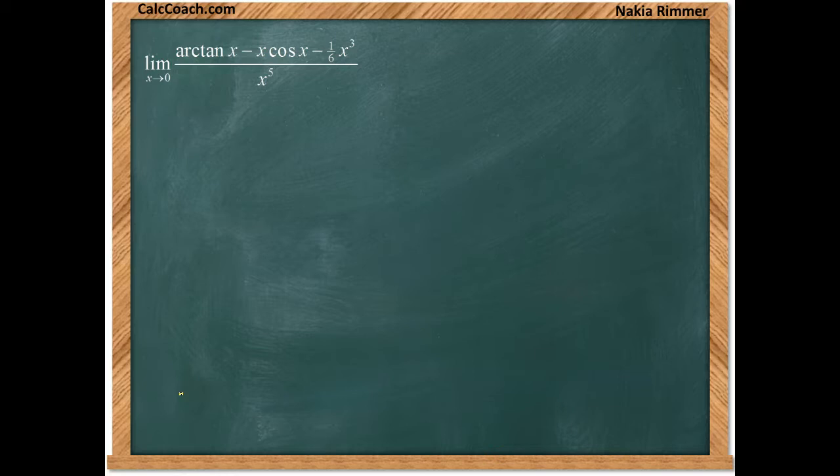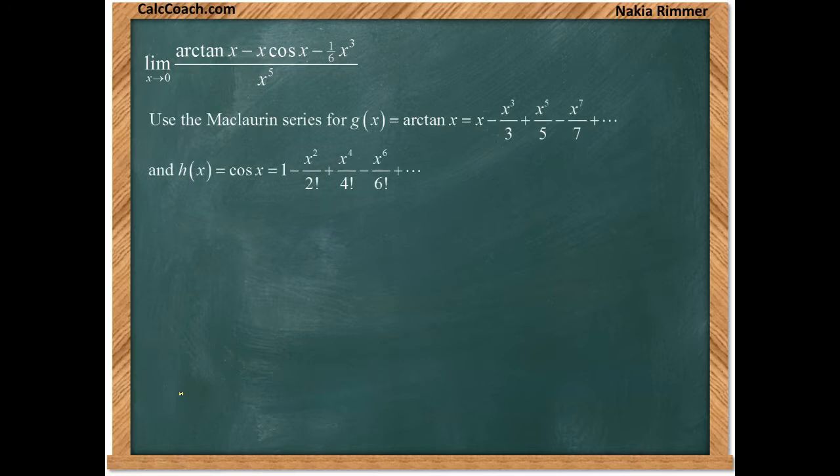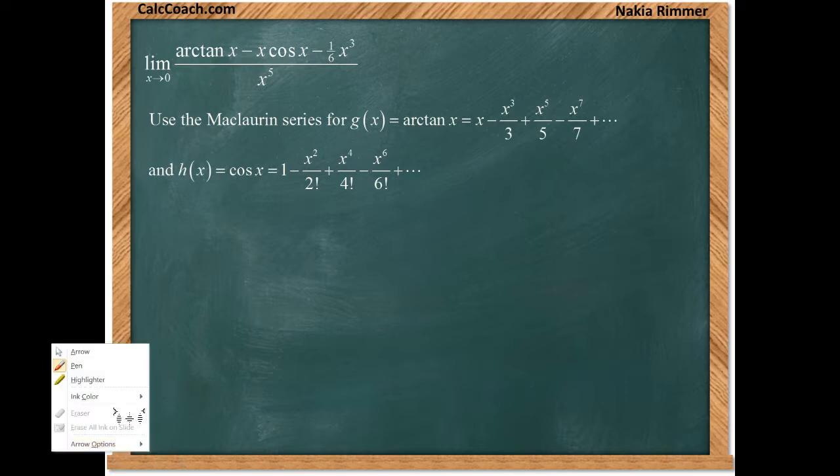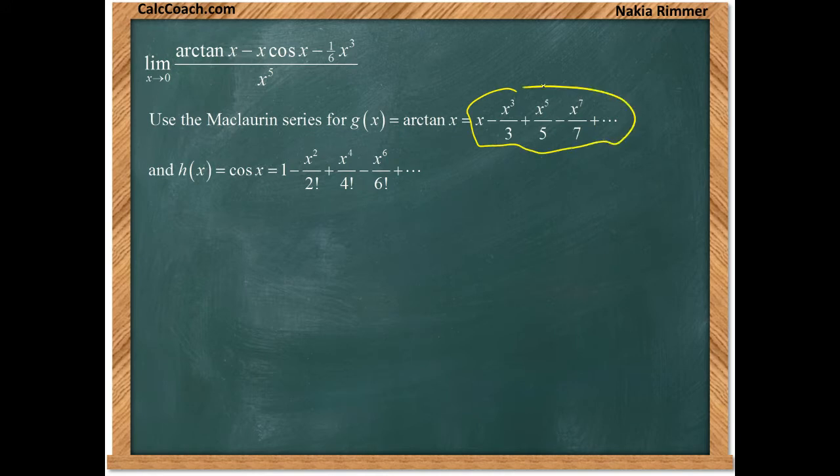We need the power series for arctangent, that's one of the known power series, and the power series for cosine, that's another one of the known power series. We're going to take the numerator and replace each of those functions. Arctan x will be replaced by x minus x cubed over three and the rest of those terms. Cosine x will be replaced by one minus x squared over two and the rest of those terms.